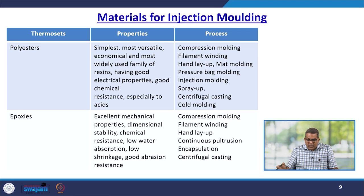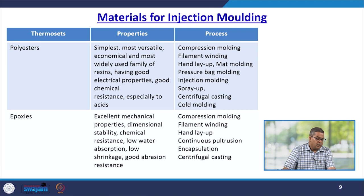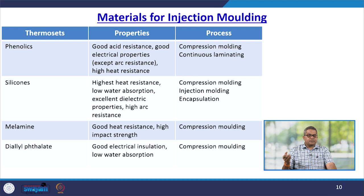Apart from injection moulding, various other processes can be used to get the desired product: compression moulding, filament winding, hand layup, mat moulding, and pressure bag moulding. Epoxies, which are thermosets, have excellent mechanical properties, very good dimensional stability, good chemical resistance, low water absorption, low shrinkage, and good abrasion resistance. For epoxies, you can also use compression moulding, filament winding, hand layup, continuous pultrusion, and encapsulation.